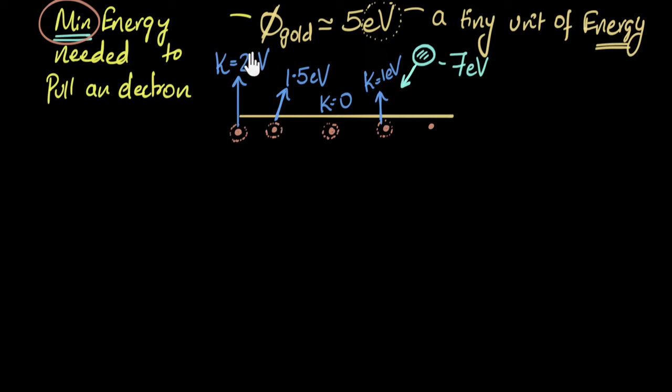Do you think any electron in this situation, for gold, when you shine seven electron volts of light, do you think any electron can come with more energy than two electron volts? Can someone have more than two? I want you to pause and think a little bit about it. Do you think that's possible? No, it's not possible because I know for sure that any electron I take, you have to at least spend five from this to escape. You can spend more, but you at least need to spend five. So if I at least spend five, the maximum available energy for kinetic energy is two. It can be less also, but you cannot have more than two.